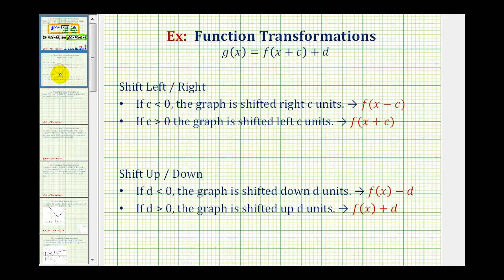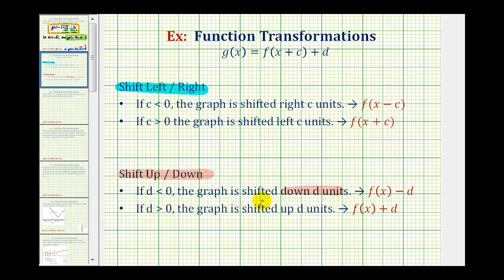Just in case you need some notes: for a left or right shift, if c is negative, the graph is shifted right c units, so we'd have f of the quantity x minus c. And if c is positive, the graph is shifted left c units, so we'd have f of the quantity x plus c. For a shift up or down, if d is negative, the graph is shifted down d units, so we'd have f of x minus d. And if d is positive, the graph is shifted up d units, so we'd have f of x plus d.